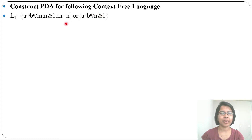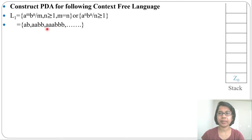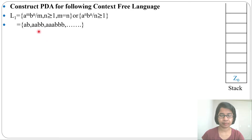This represents equal number of a's followed by equal number of b's, where the minimum value of n is 1. So the minimum string accepted is 'ab', then 'aabb', 'aaabbb', and so on. If n were ≥ 0, it would also accept epsilon, but since n ≥ 1 the minimum string is 'ab'. For designing a PDA we need a stack, and the topmost symbol initially is Z0.